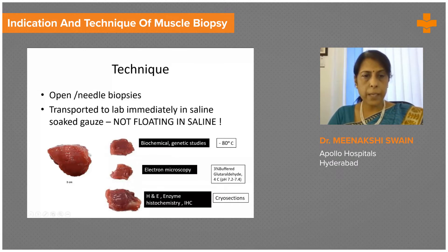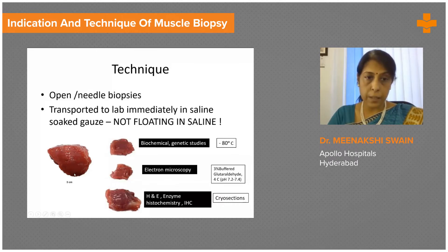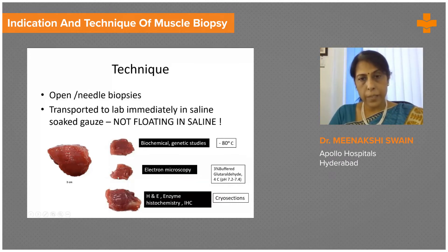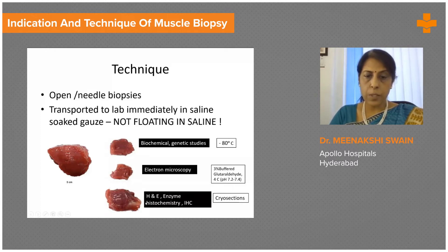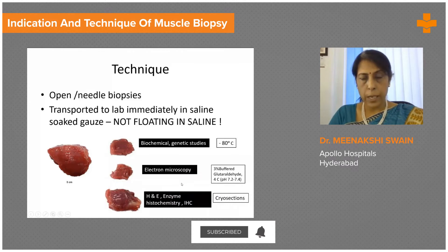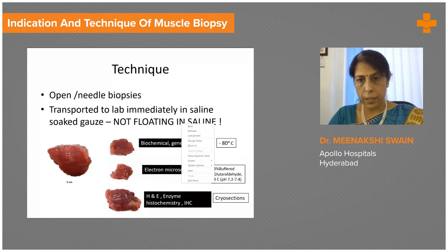Pathologists are always happy with big biopsies — an ideal size is about a five centimeter cube. Once the muscle biopsy arrives in the lab, it is triaged: a small bit of about 2 ml is preserved in 3% buffered glutaraldehyde for electron microscopy and saved at 4 degrees Celsius. A slightly bigger portion is frozen at minus 80 degrees Celsius and stored for biochemical and genetic studies if required later. The rest of the tissue is processed for routine sections after cryosectioning, and for H&E and enzyme histochemistry.